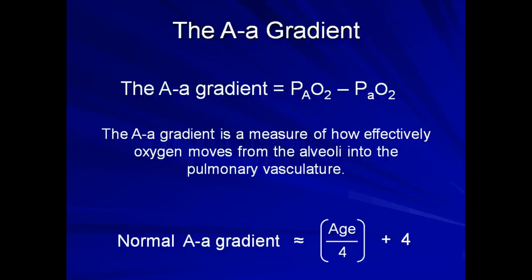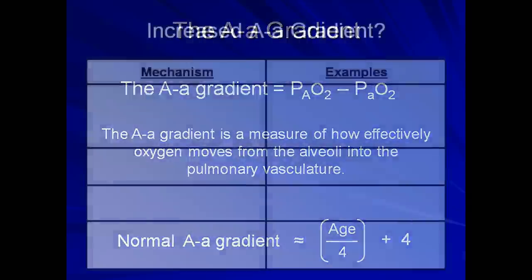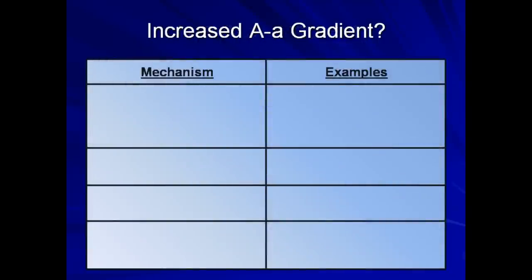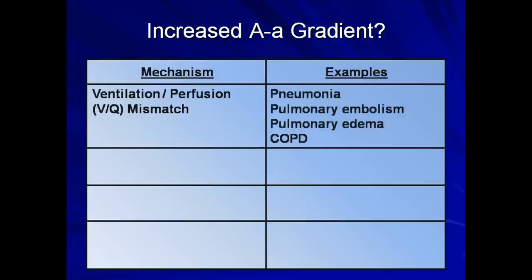I categorize etiologies into four different basic mechanisms. First, the most common mechanism is a ventilation-perfusion mismatch, whereby alveoli are not ventilated in proportion to their blood flow. There are numerous examples of this, including pneumonia, pulmonary embolism, pulmonary edema, and COPD.